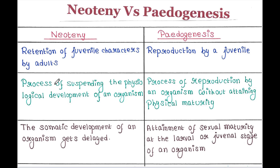Neoteny is the process of suspending the physiological development of an organism. Paedogenesis is the process of reproduction by an organism without attaining physical maturity.